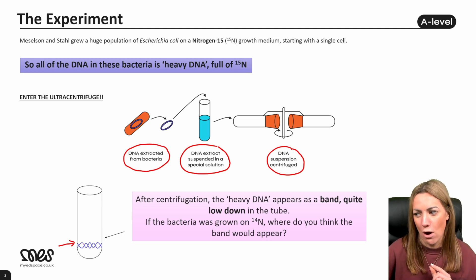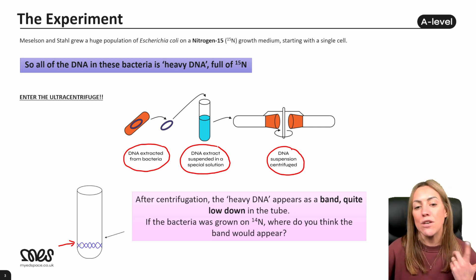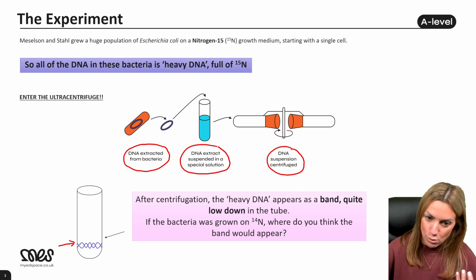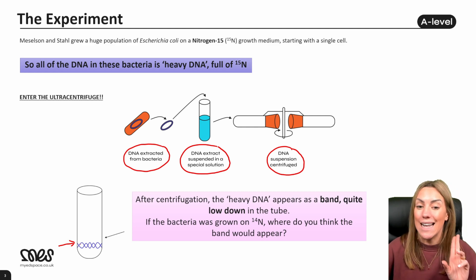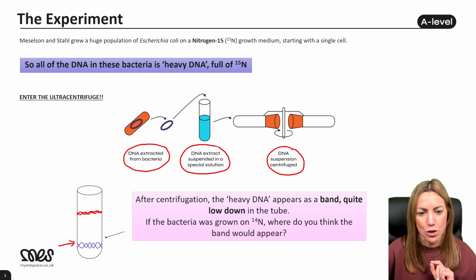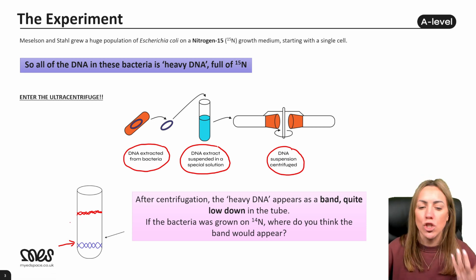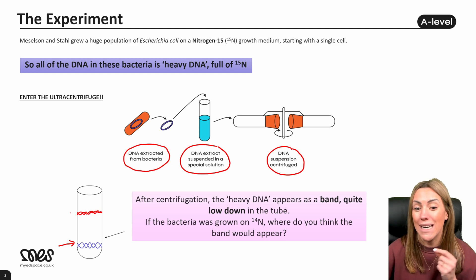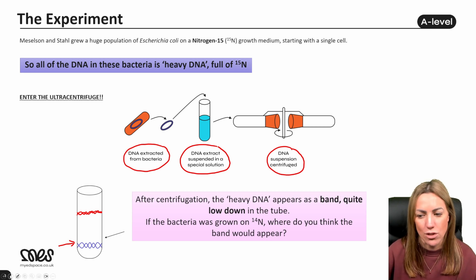If the bacteria had been grown on N14, where would the band appear? If they'd been using N14 to make their bases and DNA, the DNA would contain N14. N14 is lighter, or less dense, so when centrifuged the DNA band would appear higher up the tube. You don't have to draw it in a specific place — it just has to be a higher band, showing the examiner that the DNA is less dense because it contains lighter nitrogen.